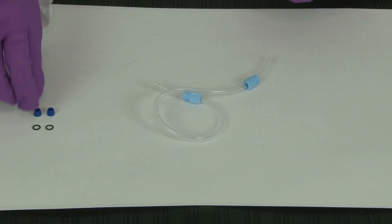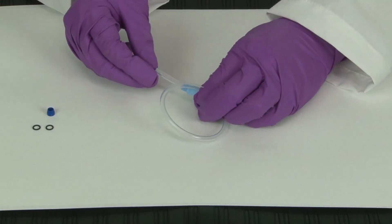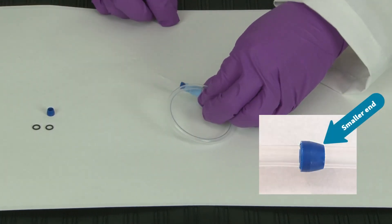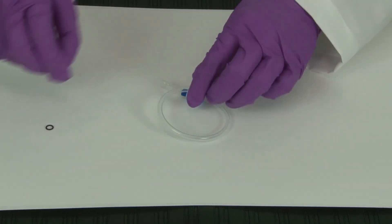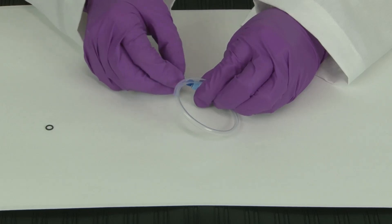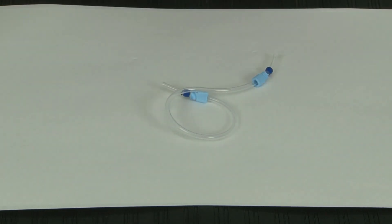After that, add the navy blue ferrules so that the smaller end points to the light blue nut. Now add the black o-ring to the end of the tubing. Repeat these steps on the other side of the tubing.